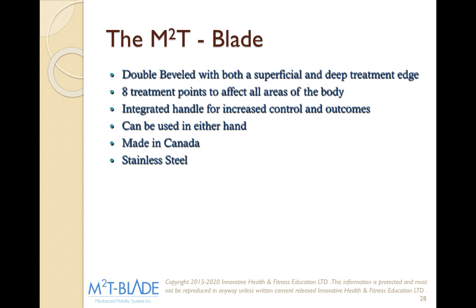A little bit about the M2T blade. M2T stands for Myofascial Mobility Tool. With this tool, we're trying to create myofascial mobility within the body. It's a double bevel with both a superficial and deep treatment edge. We have eight trim points to affect all areas of the body. We've integrated a handle for increased control and outcomes, and it can be used in either hand. It's made in Canada from surgical grade stainless steel. A lot of steel out there is a porous material, which can trap dirt, debris, skin cells, and oils. With surgical grade stainless steel, it's a non-porous metal, so it won't trap any of that.